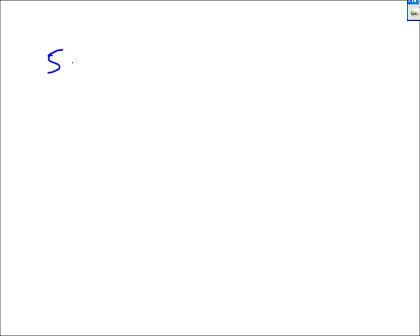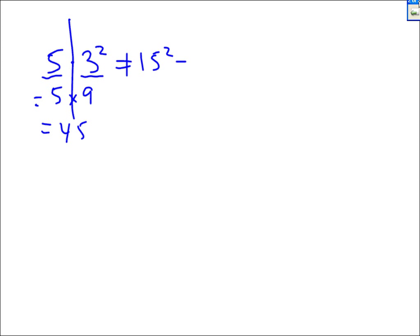Here, 5 times 3 squared. This is not 15 squared — there's a brick wall that separates what you're multiplying. 5 times 3 squared: 5 is 5, and 3 squared is 9, and 5 times 9 is 45. It is not 15 squared, which is 225.